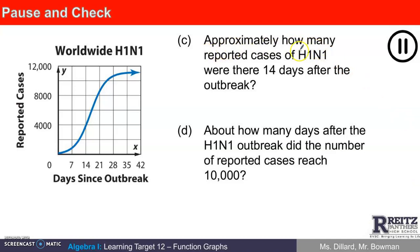How many cases were reported of H1N1 14 days after the outbreak? Where can I find that on the graph? Right there. 14 days since the outbreak is right here. So what I want to do is I want to go to this point right there when X is 14. And I want to decide roughly what that Y value is. So it might help again to look and see what we have here. If this is zero and this is 4,000, this value here would be 2,000.